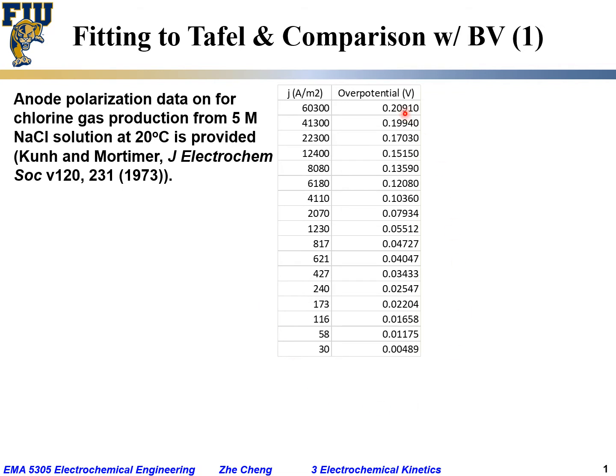This table here gives the anode polarization data. Polarization data again means current density versus overpotential. This table gives anode polarization data for chlorine gas production from sodium chloride solution, producing chlorine gas Cl2 from sodium chloride solution, 5 molar per liter solution at 20 degrees C. This is data taken from literature.